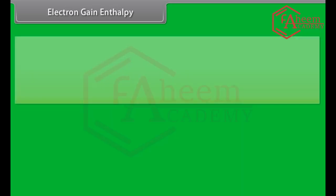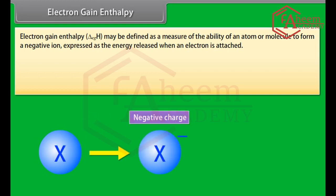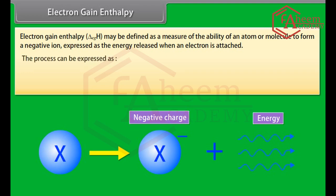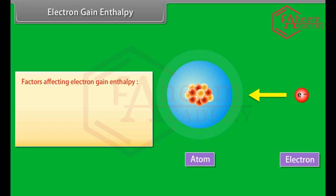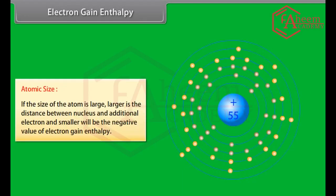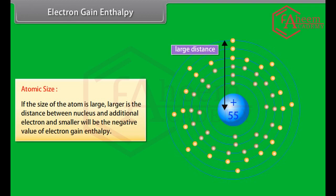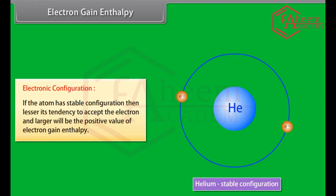Electron gain enthalpy may be defined as a measure of the ability of an atom or molecule to form a negative ion, expressed as the energy released when an electron is attached. The process can be exothermic or endothermic. Factors affecting electron gain enthalpy: nuclear charge — greater nuclear charge means greater attraction for the incoming electron, giving a larger negative value of electron gain enthalpy; atomic size — larger atomic size means greater distance between nucleus and additional electron, giving a smaller negative value; electronic configuration — if the atom has a stable configuration, it has less tendency to accept an electron, giving a larger positive value.